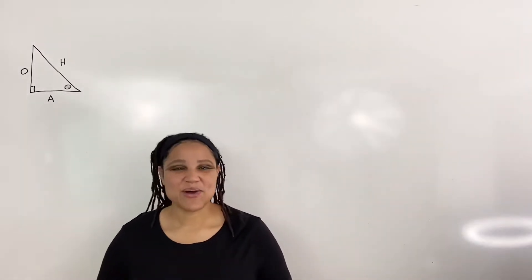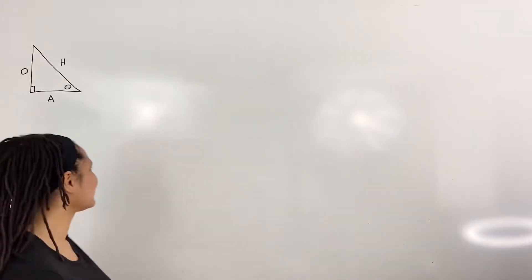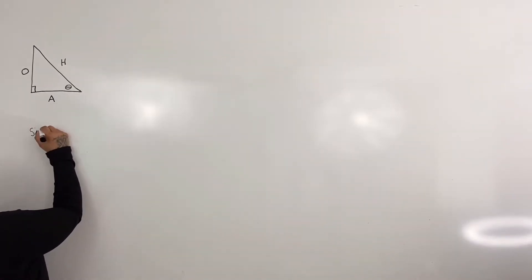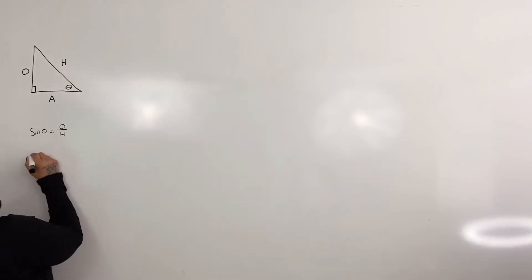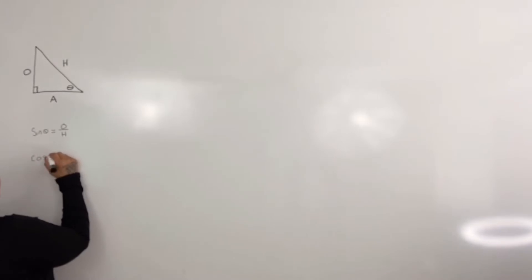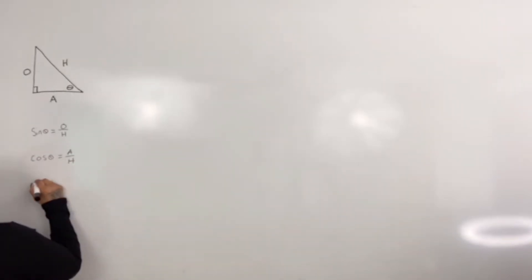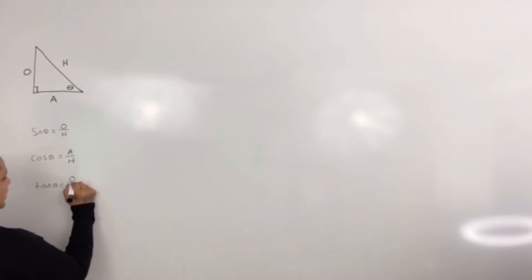Now we know from right triangle trigonometry that sine of theta is equal to opposite over hypotenuse, cosine of theta is equal to adjacent over hypotenuse, and tangent of theta is equal to opposite over adjacent.